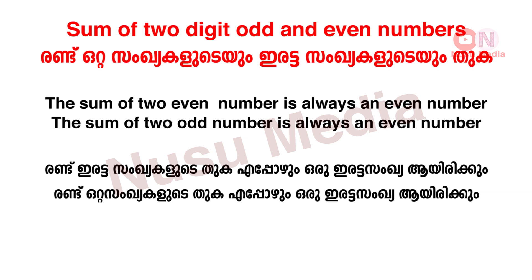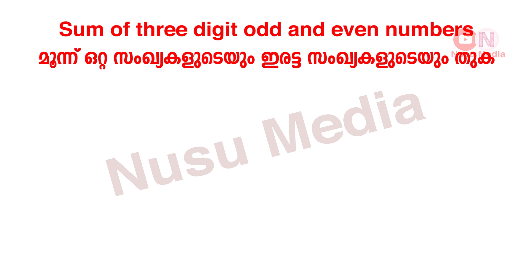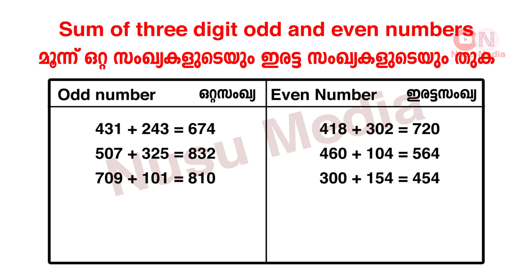Now let's start with two-digit numbers. The next activity is the sum of three-digit odd numbers and even numbers. Let's add three-digit odd numbers: 431 plus 243 is 674. 507 plus 325 is 832. 709 plus 101 is 810.